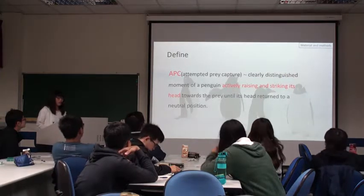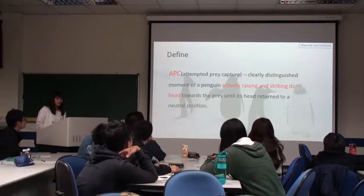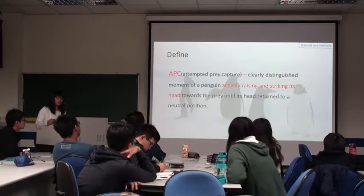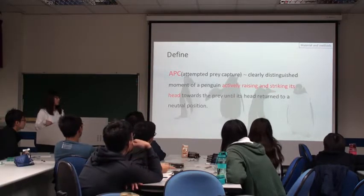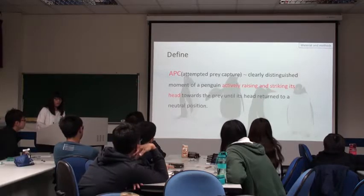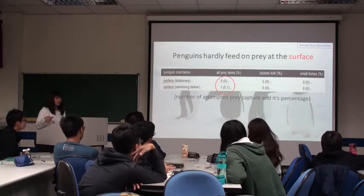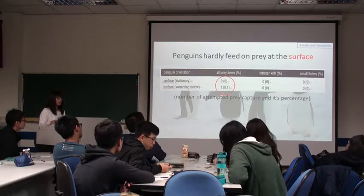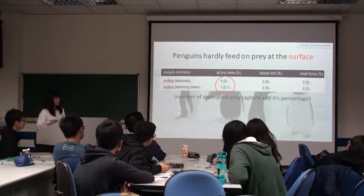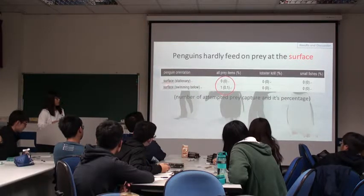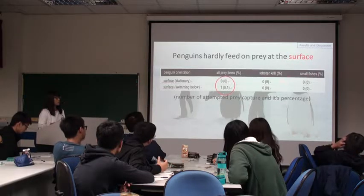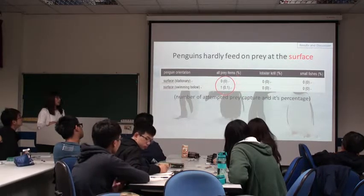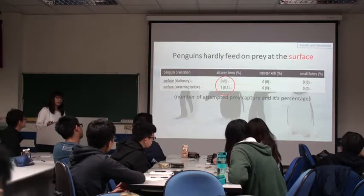The other thing we need to define is APC — attempted prey capture. It is defined as the penguin actively raising its head and striking its head towards the prey, until it has returned to a neutral position. Neutral means a normal resting position. Through the data and video we collected, this project used a custom code and led us to the results. Please take a look at this chart showing where the penguin was — at the surface. Krill and small fish are the two main food sources, and the number here is the attempted prey capture percentage. We can note that penguins hardly feed on their prey at the surface of the ocean.